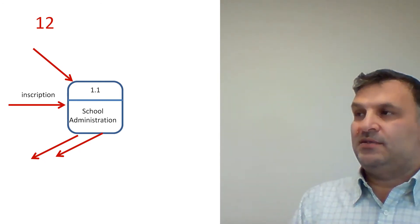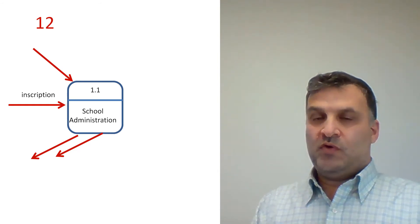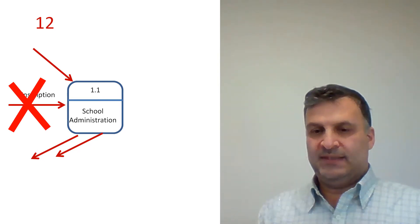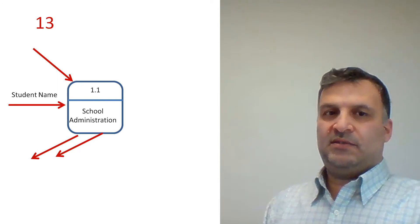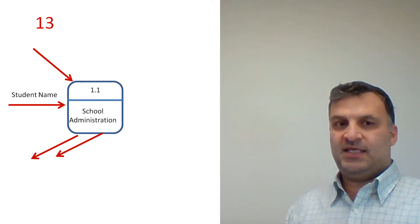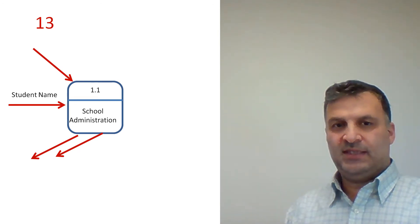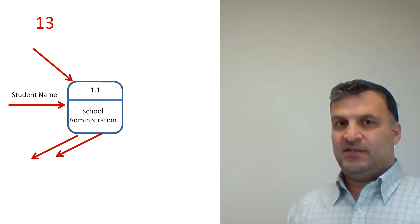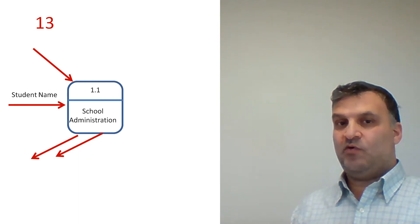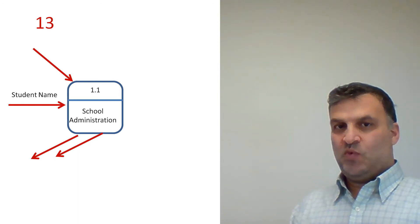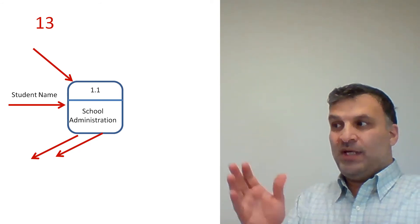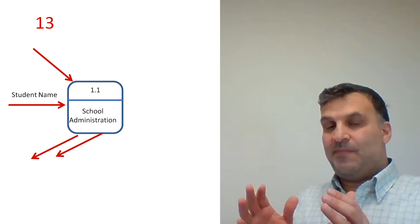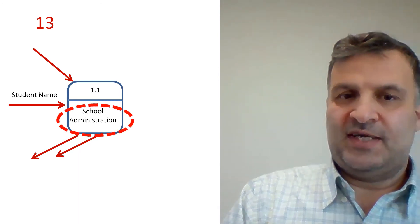What is the problem here? The name of the data flow is incorrect because it is not actually a data flow. We should change it to 'student name.' Also, a student making registration — 'school administration' — is a real problem because in DFD we use processes, which are functions, not entities. When we talk about 'school administration' we are talking about an entity. We should use 'student registration' instead, because we should describe a process or function in the system, not an entity.